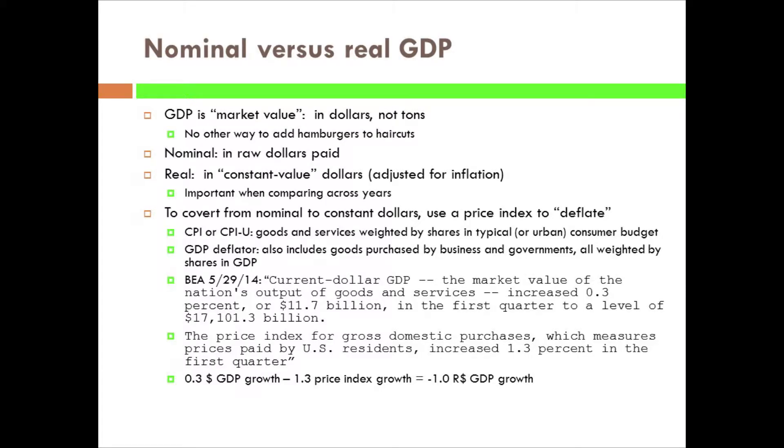There are different ways to make this conversion — different indexes we can use to weight all the prices in the economy. To come up with the average change in prices, you have to look across hundreds or thousands of goods. One way thought to be most relevant to consumers is the consumer price index, or CPI. In the CPI, we take only prices paid by consumers, excluding business and government purchases, and weight different goods by their share of the typical consumer's basket.